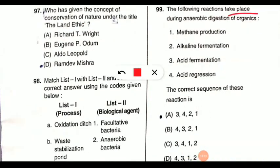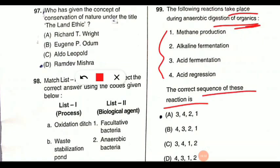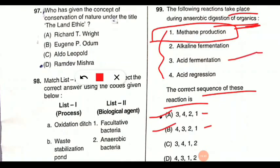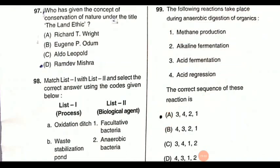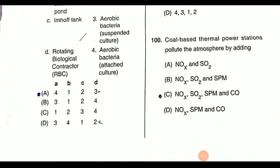Question 99: the following reaction takes place during anaerobic digestion of organics. You should know the steps and the correct sequence. The last step is always the production of methane along with carbon dioxide. The first step is acid fermentation, followed by acid regression, then alkaline fermentation, then methane production. So the correct sequence is three, four, two, one — meaning option A is correct.